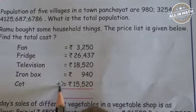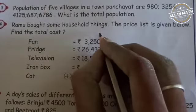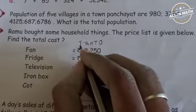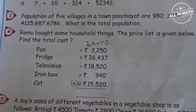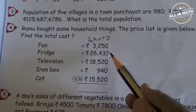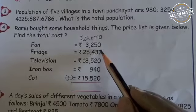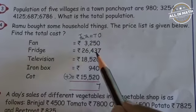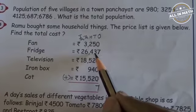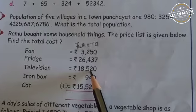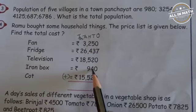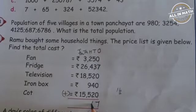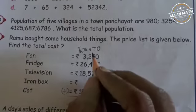Now we are going to add all the given amounts. First I am going to set up place values: 1's, 10's, 100's, 1000's, and 10,000's. Shall we add now, children? First, add all the numbers in the 1's place: 0, 7, 0, 0, 0. 7 plus all those zeros gives 7. Look at the 10's place: 5, 3, 2, 4, 2. 5 plus 3 is 8. 8 plus 2 is 10. 10 plus 4 is 14. 14 plus 2 is 16. So write 6 in the 10's place and take 1 as a carry over in the 100's place.